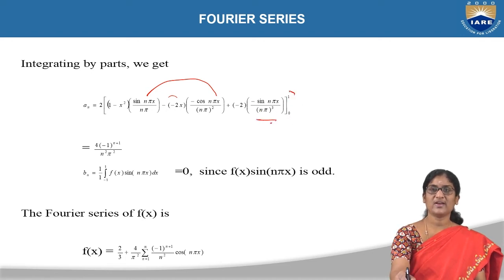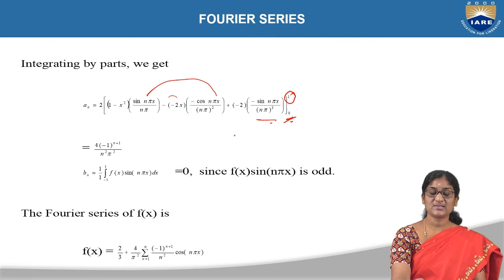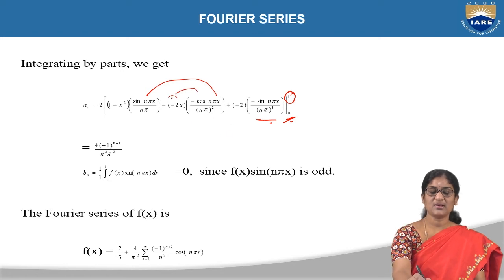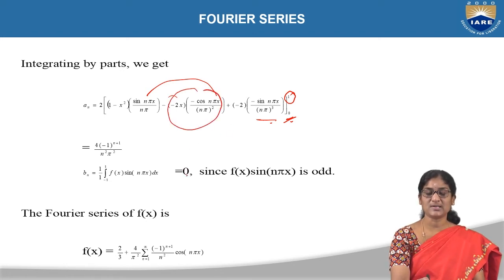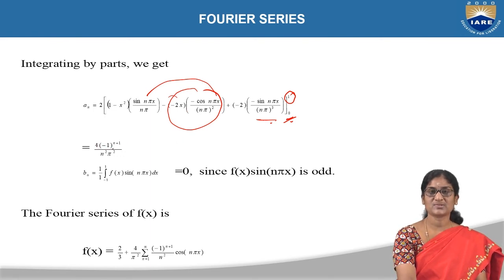After substituting the upper and lower limits, there are three terms. The first and last terms become 0 at both limits. The middle term also becomes 0 at the lower limit when x = 0. So we get aₙ = 4 × (−1)^(n+1) / (n²π²).